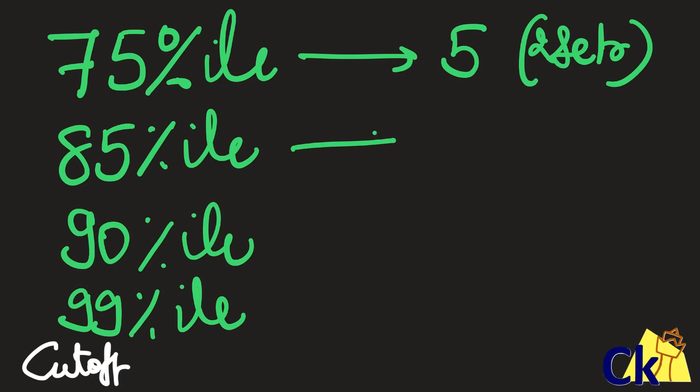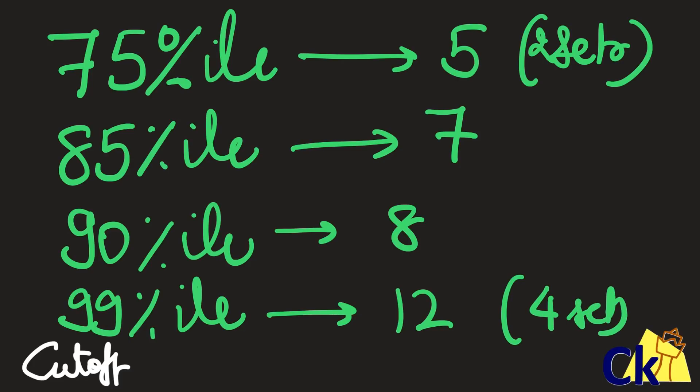85 percentile is also enough at the bare minimum level, which means seven questions correct. 90 percentile means 8 questions correct, and 99 is 12 questions correct. So I have to do four sets, three sets, two sets - depending on your accuracy. You can see here four sets, three sets, two sets is the cutoff, that's it.